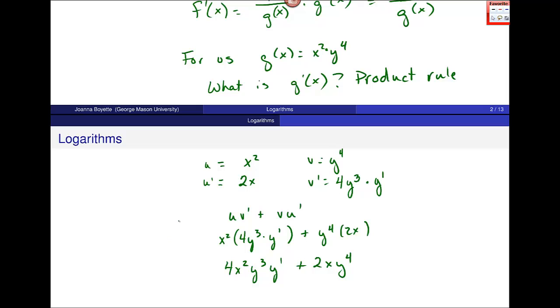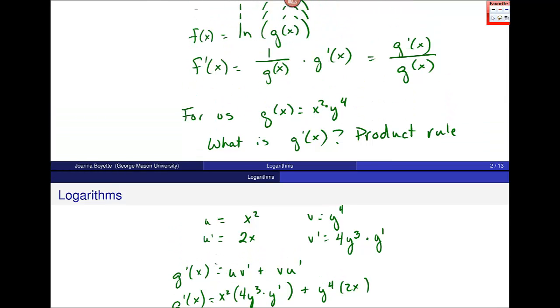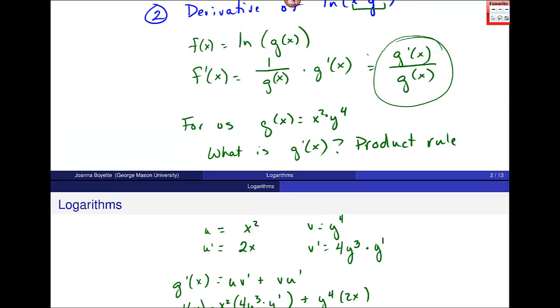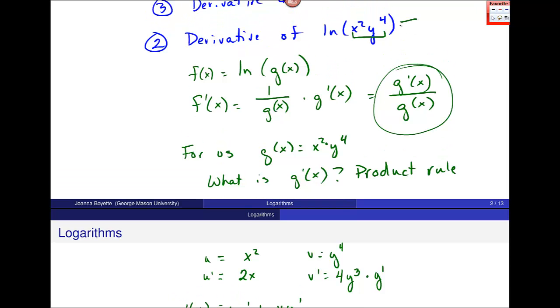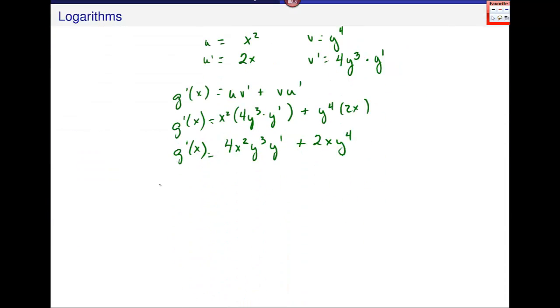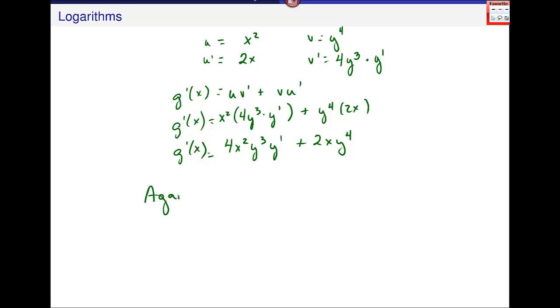That's my g'(x). I still haven't put it into the derivative for—let me go back up. I'm trying to put it in right here. So now, if I name this, this is my f(x). My f(x) piece is this piece that looks like natural log of x²y⁴. And I know that f'(x) is, if this thing is g(x), 1 over g(x) times g'(x), or that's g'(x) over g(x).